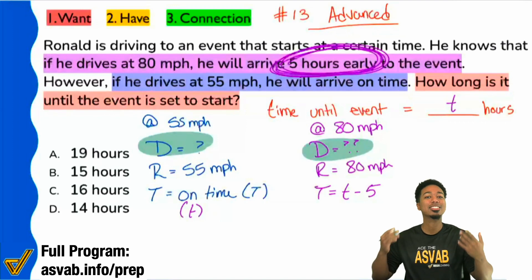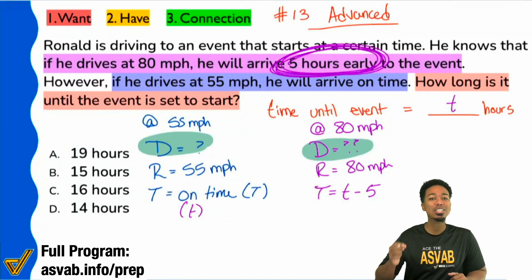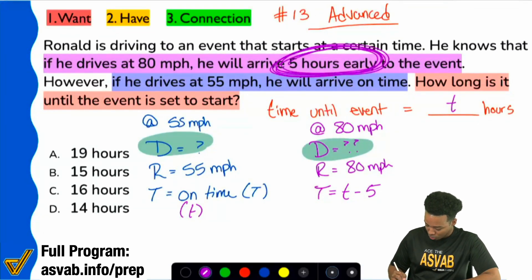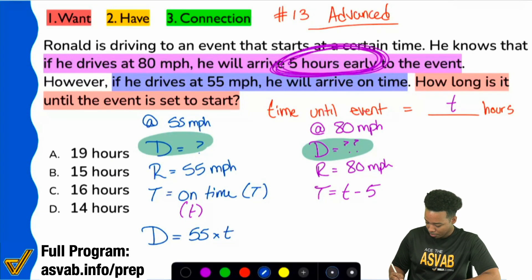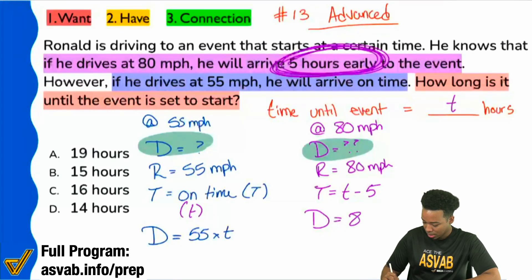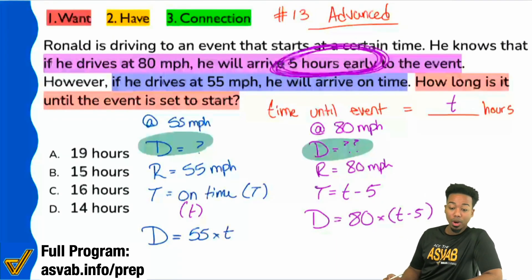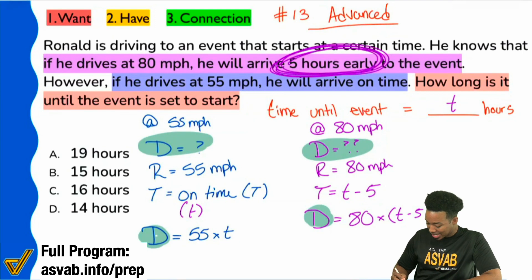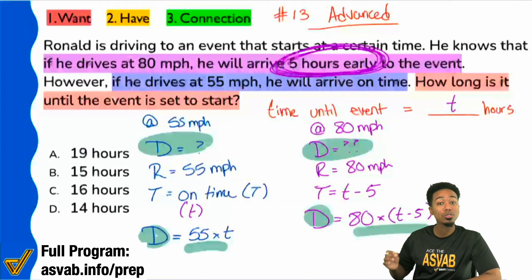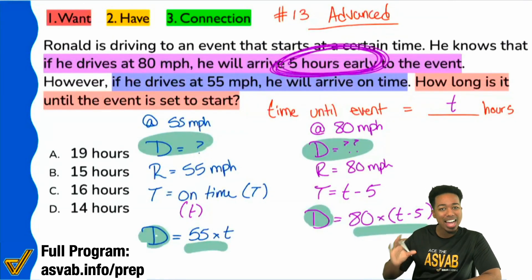So we can use that to our advantage and we can say that if we set up this formula over here as distance equals rate times time or distance equals 55 times T over here in purple, when we say distance equals 80, the rate times time, which is T minus five, well guess what? These two distances are the same. Because they're the same, we can set these equations equal to each other.